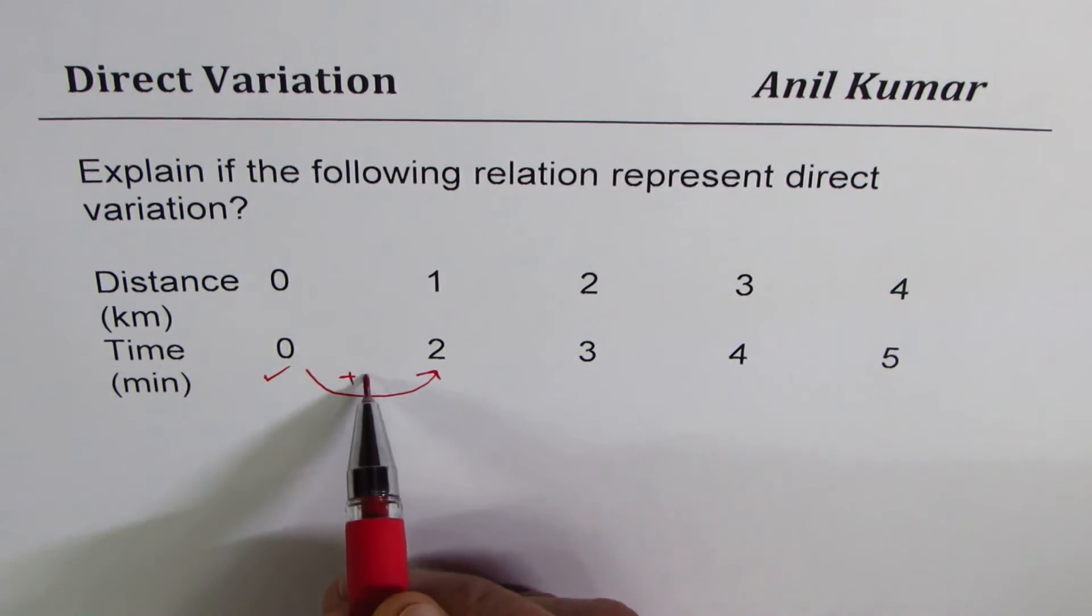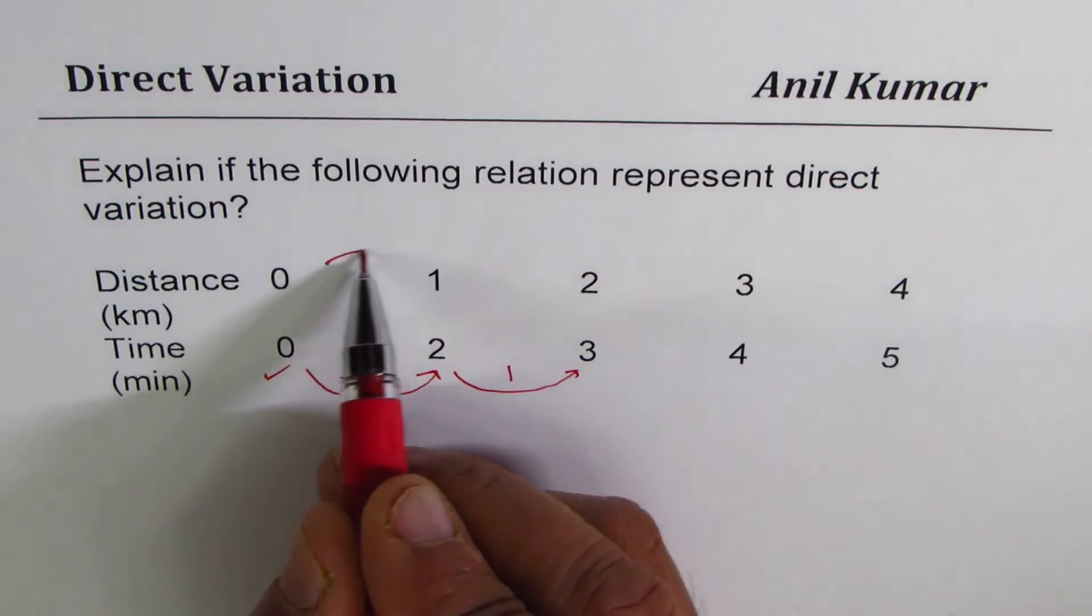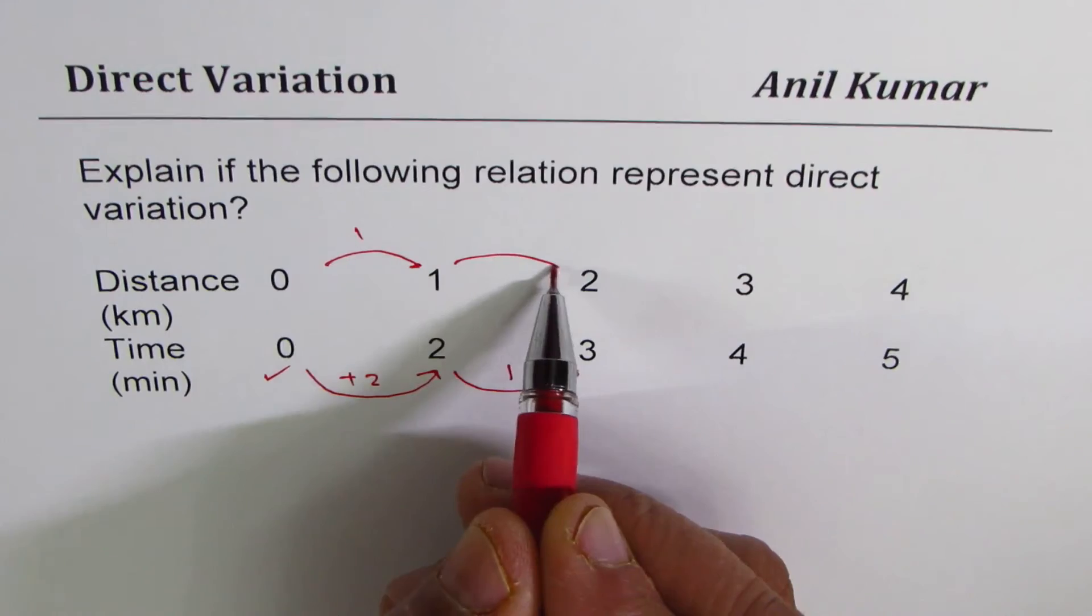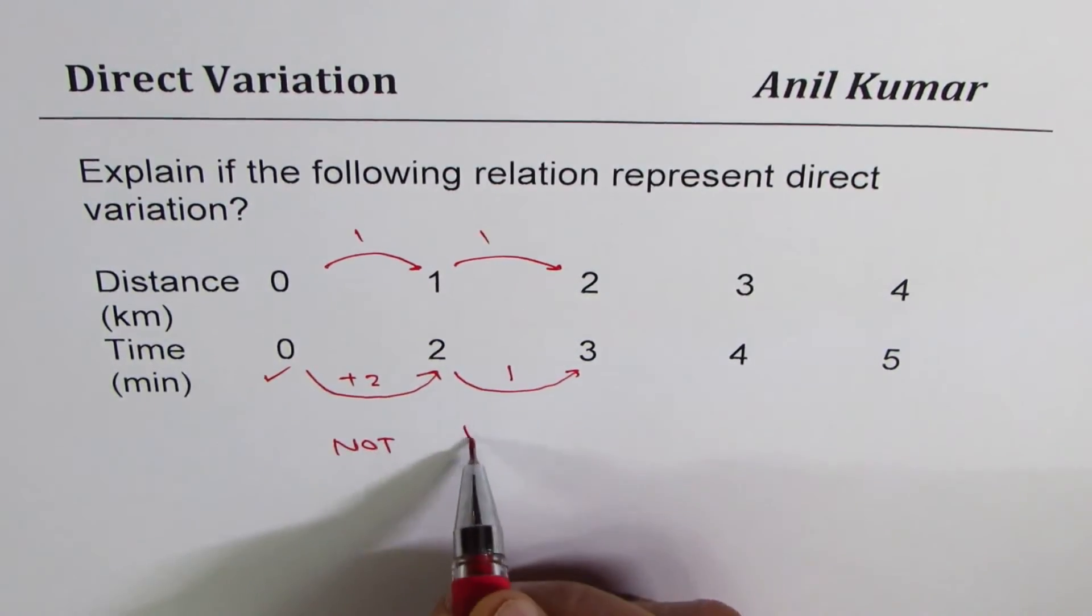You go up by 2, and here you go up by how much? Just 1, not 2, as the distance moves by 1 each. And therefore, it is not direct.